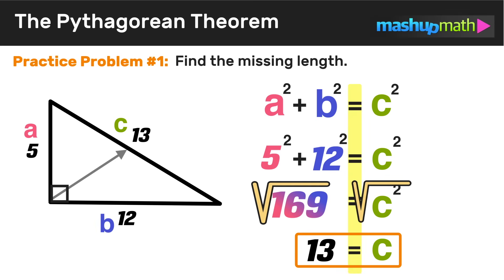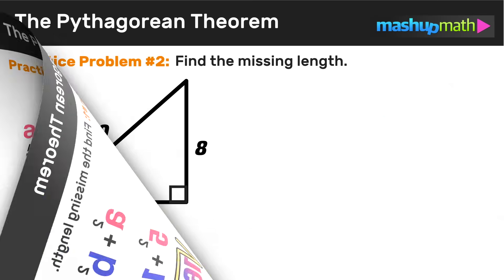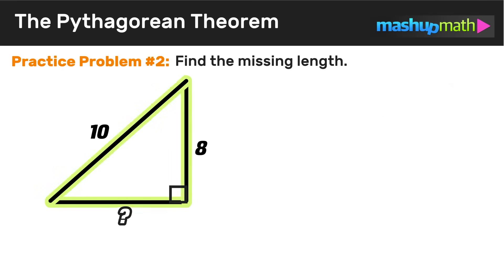Using the Pythagorean theorem, we found the missing side — in this case the hypotenuse — of the right triangle is 13. If you're still feeling confused, go back and work through that problem again. If not, let's move on to practice problem number two.